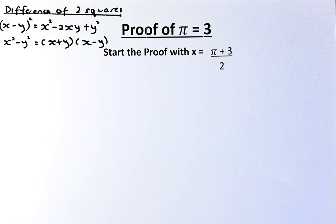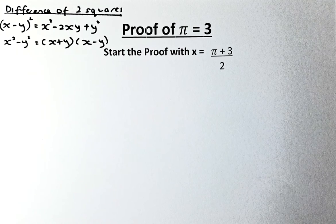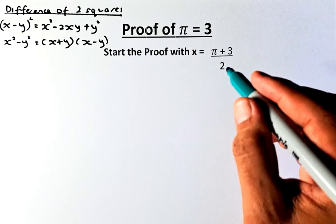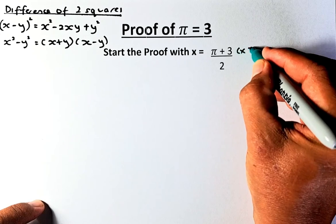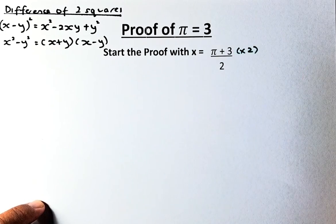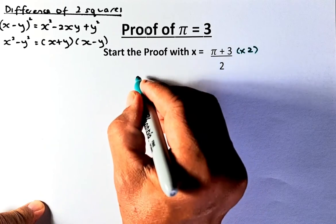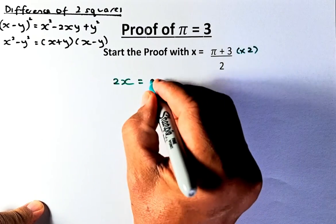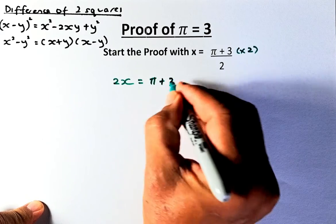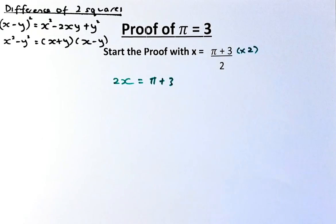We start with x equal to (pi plus 3) over 2. The first thing we do is get rid of the denominator 2 by multiplying throughout the equation by 2. So the left-hand side becomes 2x, and the right-hand side becomes pi plus 3, because the 2s cancel out.